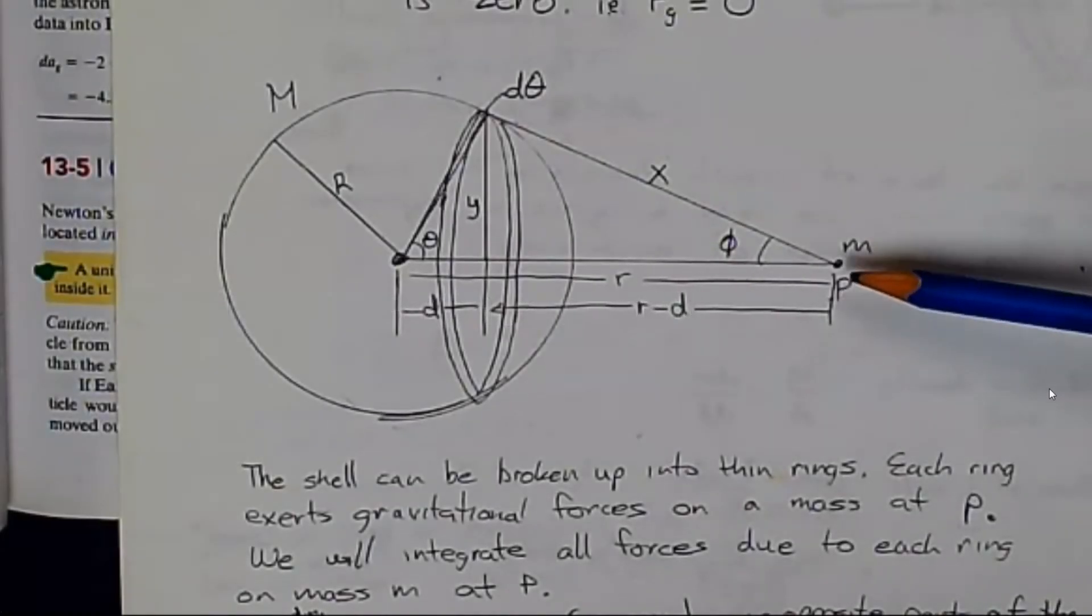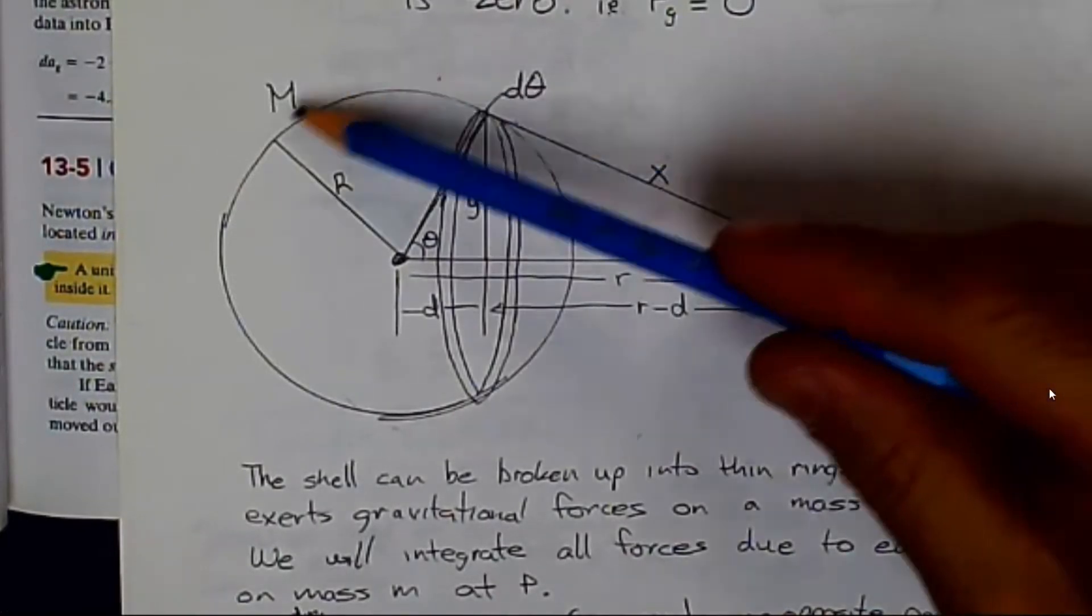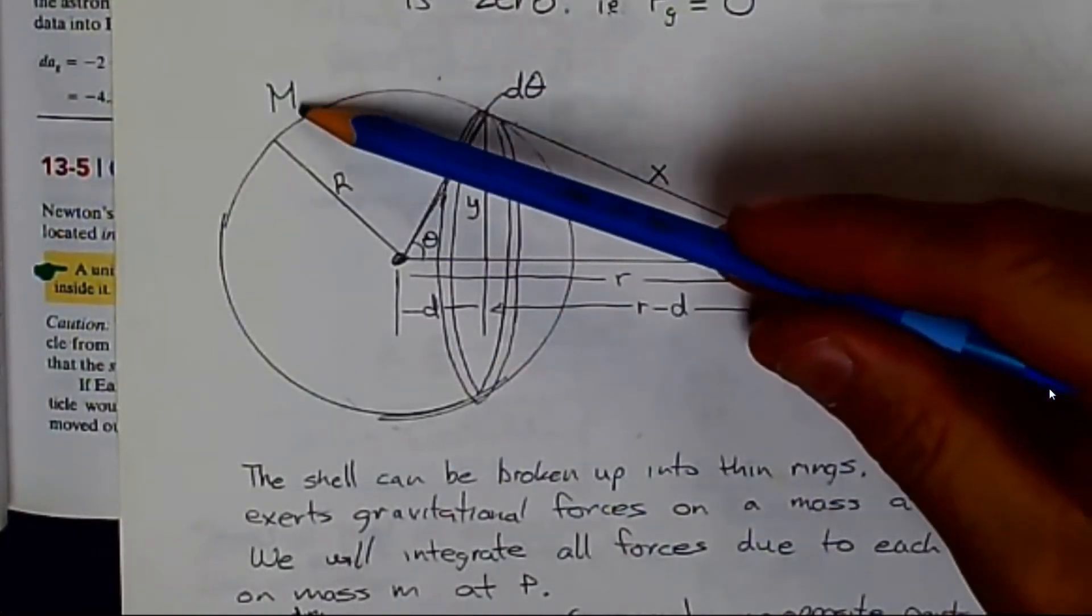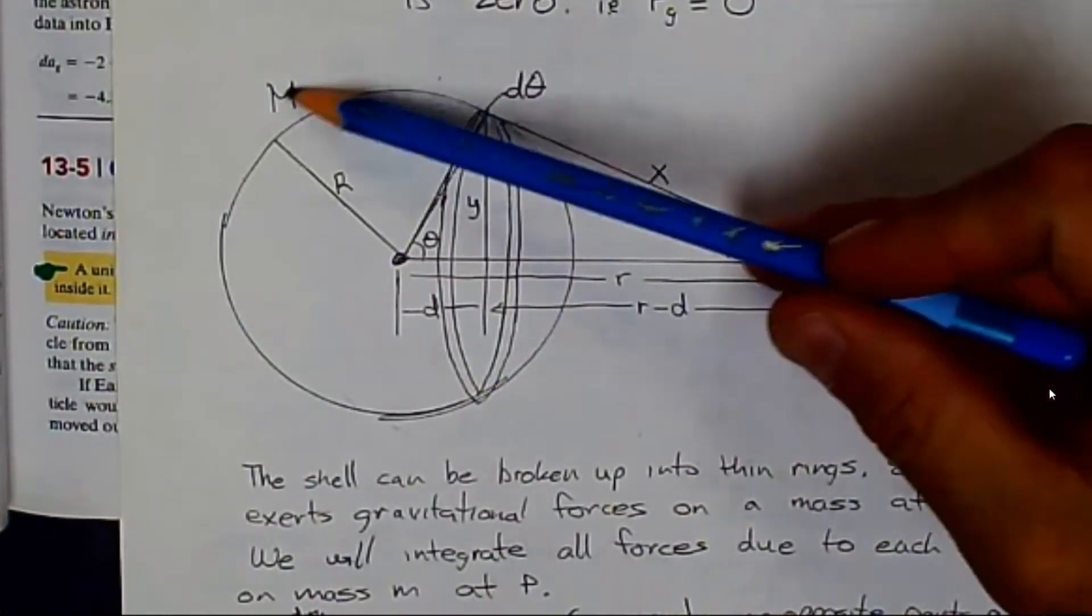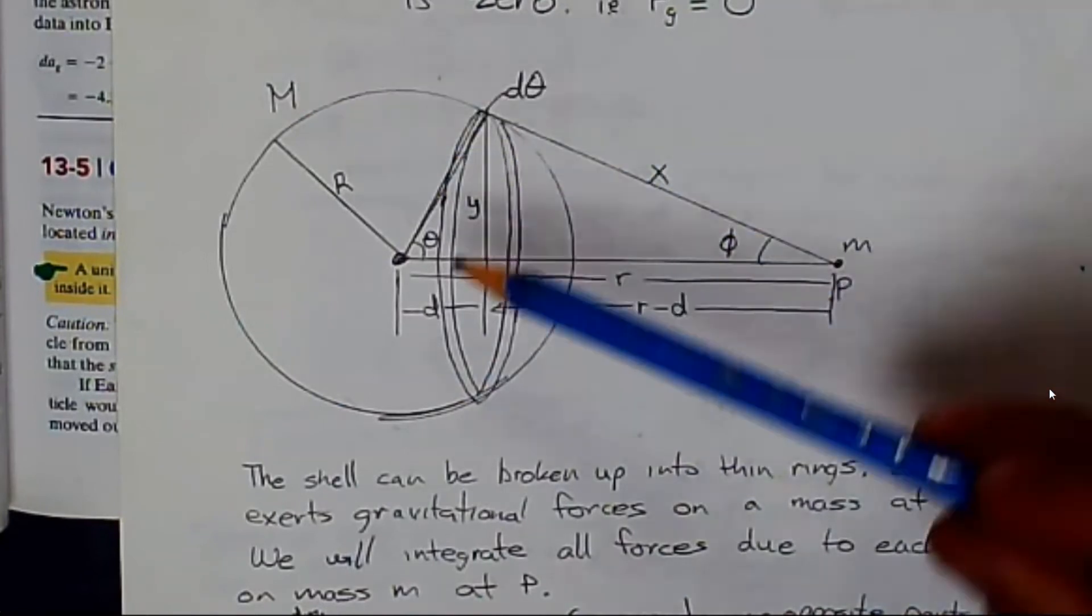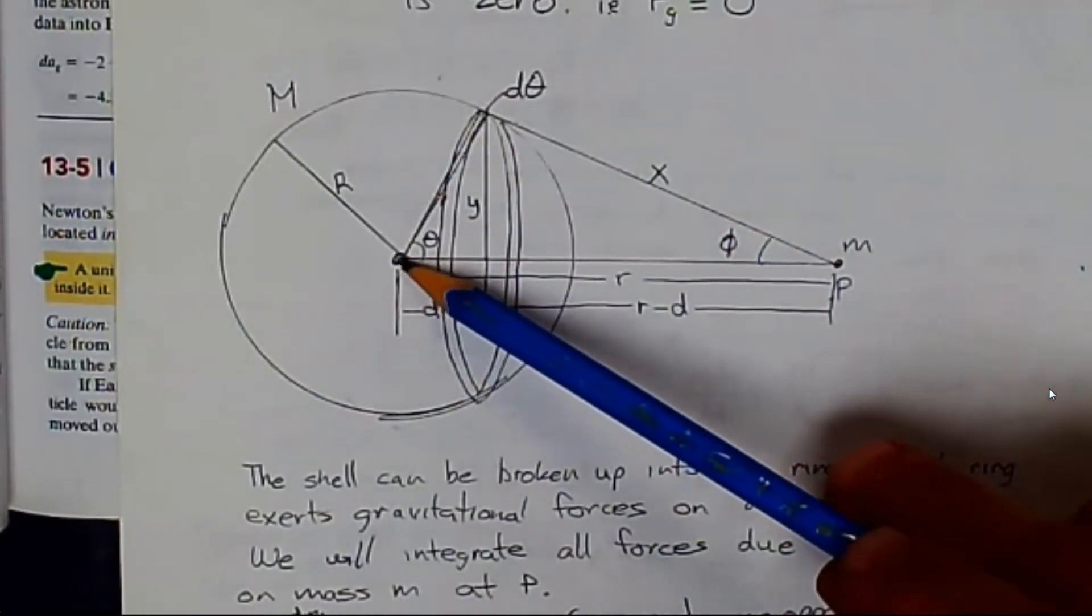In our last lesson, we learned that a particle of mass little m outside a spherical shell of mass capital M, the gravitational force, we can treat it as if all the mass capital M is located at its center.